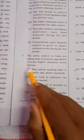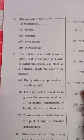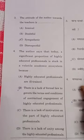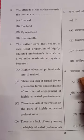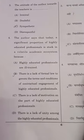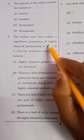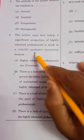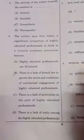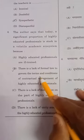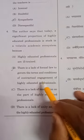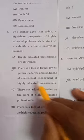Moving to the third question: the attitude of the author towards the teacher is sympathetic — option C is the correct answer. The fourth question: the author says that a significant portion of highly educated professionals is stuck in a volatile academic ecosystem because there is a lack of formal law governing the terms and conditions of the contractual engagement of highly educated professionals. The answer is option B.